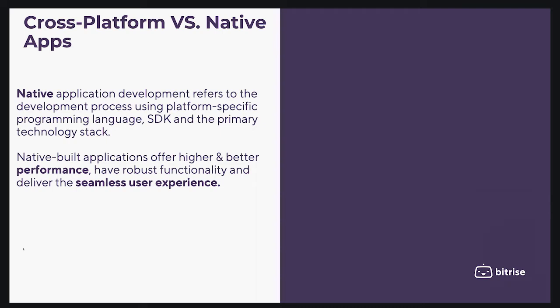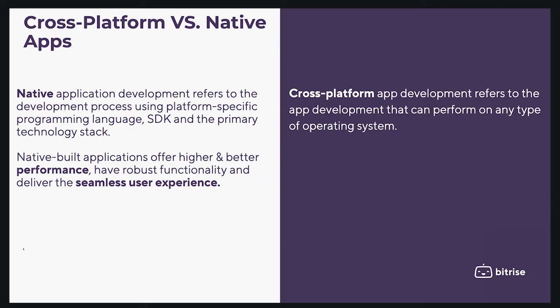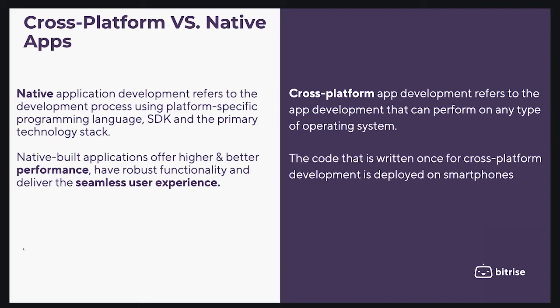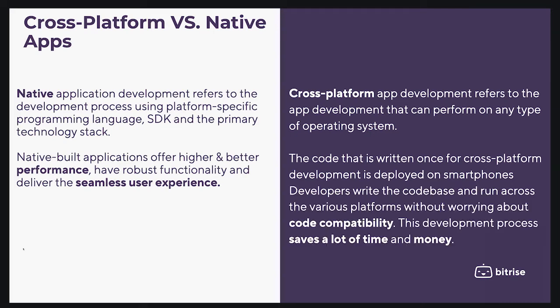Cross-platform app development refers to app development that can perform on any type of operating system. The code written once for cross-platform development is deployed on smartphones, tablets, computers, smartwatches, and televisions. Developers write the code base and run it across various platforms without worrying about code compatibility.